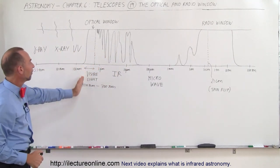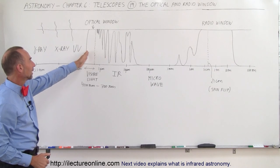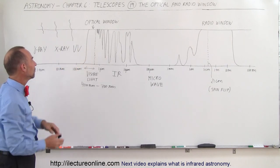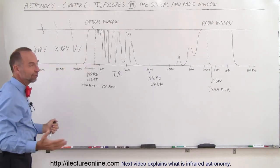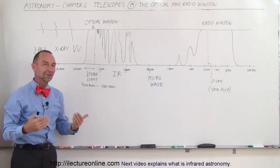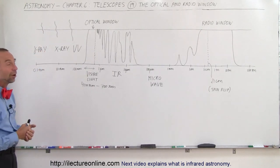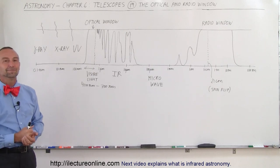And anything to the left of the high energy—in the high optical wavelength down into the UV and to the left of that—definitely you need to be up in space because you're not going to see anything through the atmosphere. That's what we call the optical and radio window.